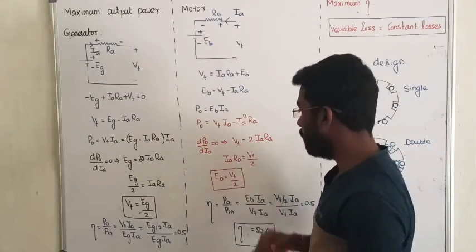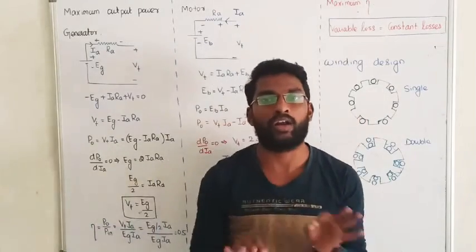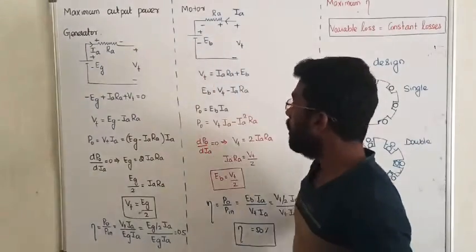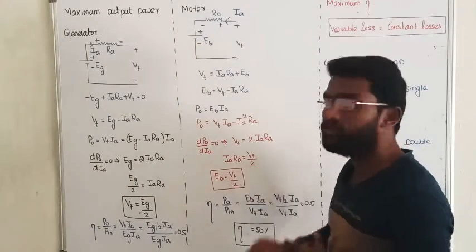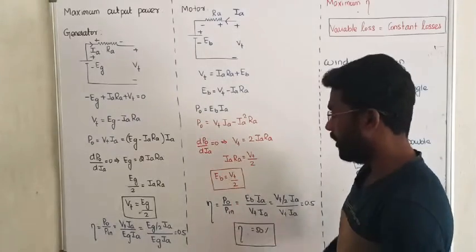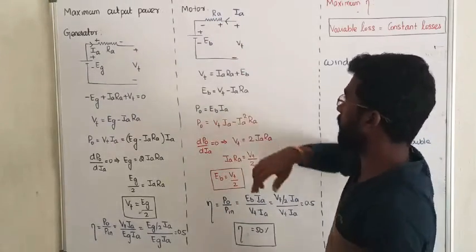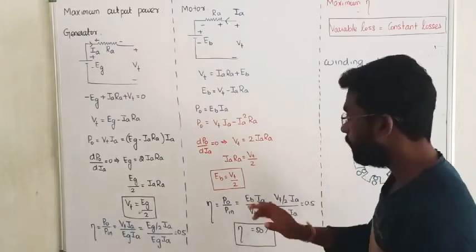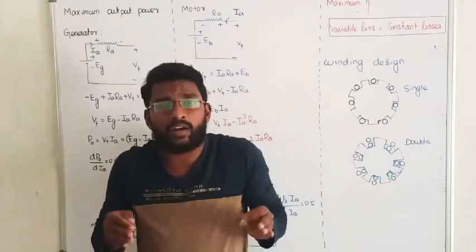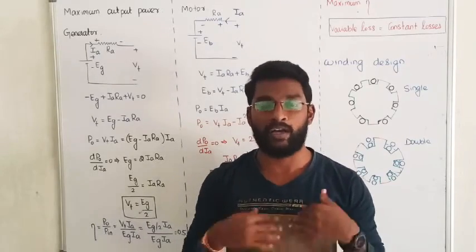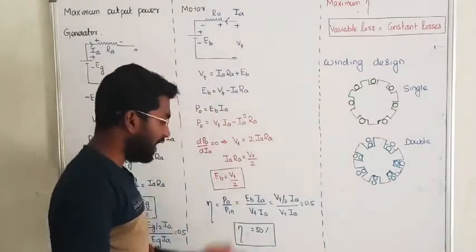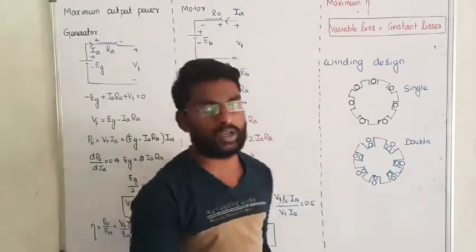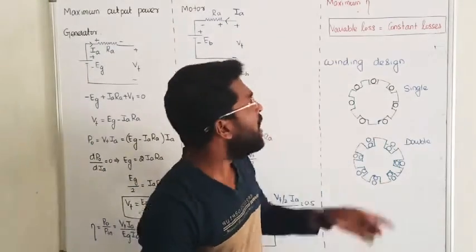So whether it is a generator or a motor, if you want to observe the maximum power at the output, you must keep your output voltage at half of the input voltage. For the motor, efficiency equals Eb*Ia divided by Vt*Ia. Substituting Eb equals Vt/2, the efficiency again becomes 0.5, or 50%. The conclusion is: when delivering maximum power from a DC machine, the efficiency is greatly reduced to 50%. You can expect both numerical and theoretical questions from this topic.